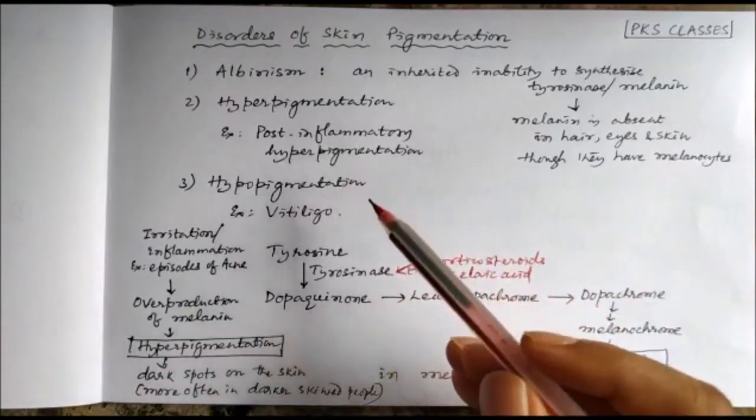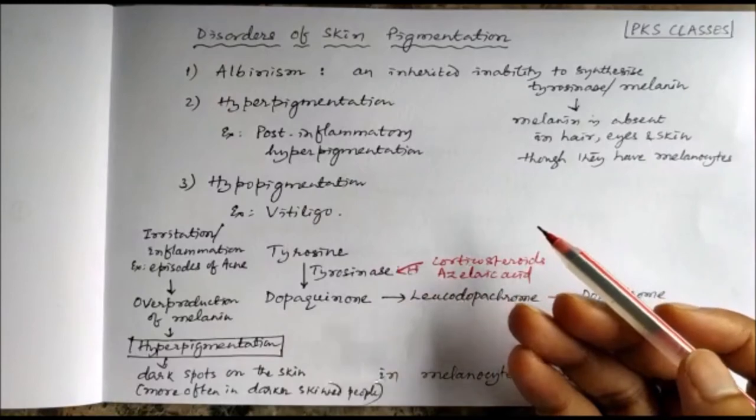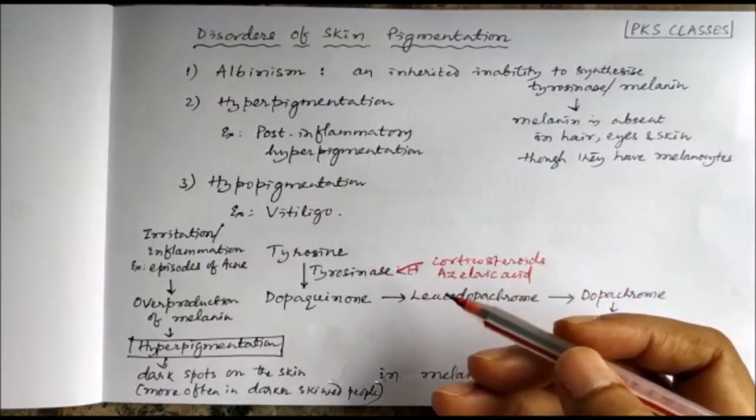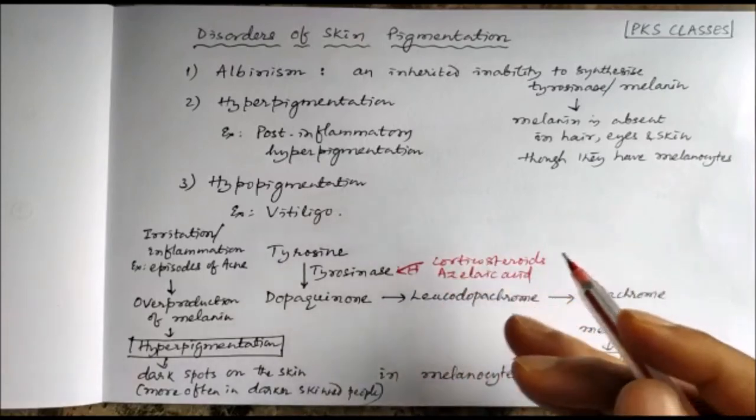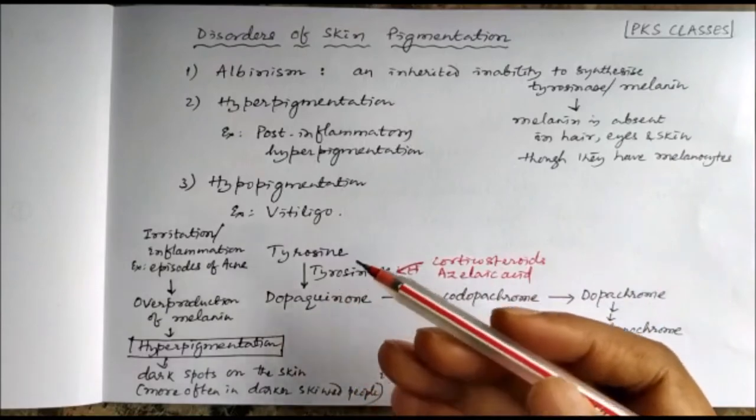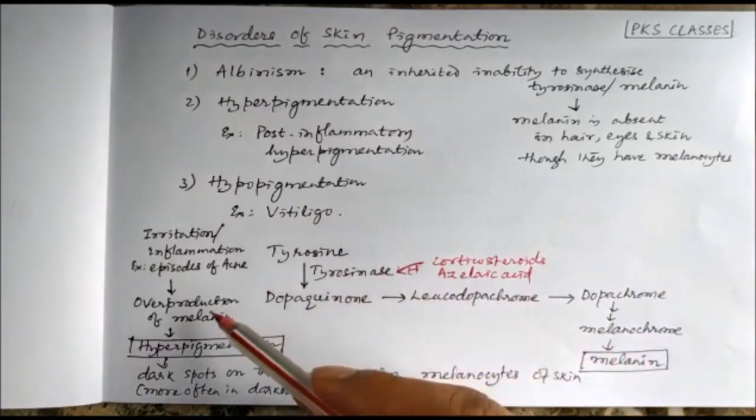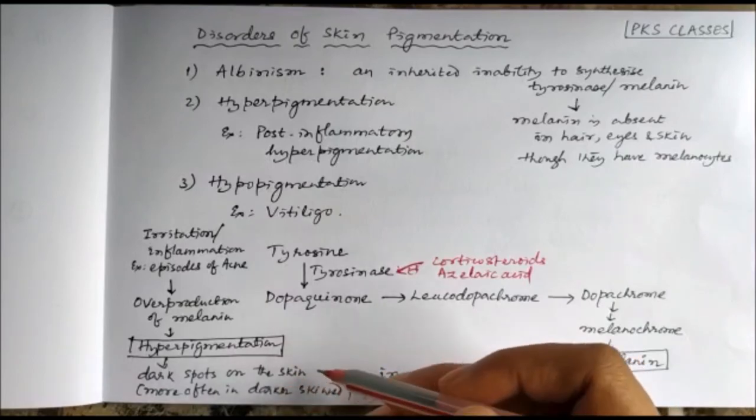Mainly after an inflammation, there is hyperpigmentation. For example, acne—if there are episodes of acne, there will be inflammation and there will be overproduction of melanin and hyperpigmentation, with dark spots on the skin.